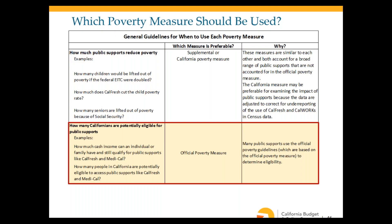Finally, if you want to assess how many Californians are potentially eligible for public supports — for example, what income level qualifies a family for CalFresh — you must use the official poverty measure, because most public program eligibility is based on the official poverty guidelines, which are derived from the official poverty thresholds.